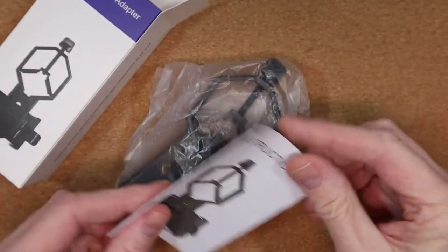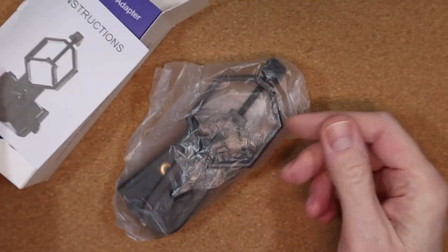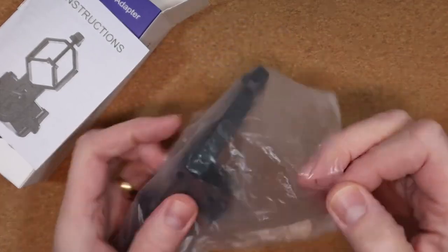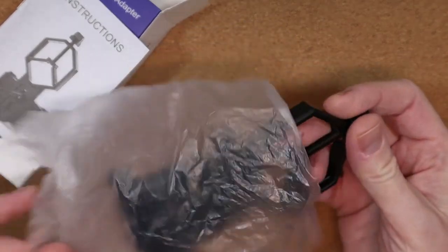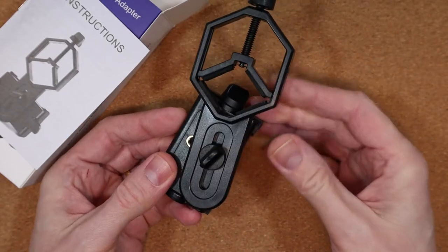Let's take a look inside the box. As well as the instruction booklet, we get the smartphone adapter itself which is made of hard plastic with soft foam and rubber sections to protect your smartphone and microscope, telescope or binoculars.